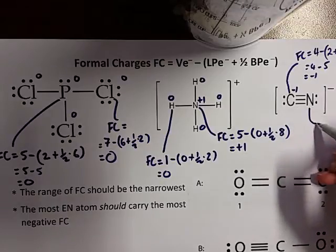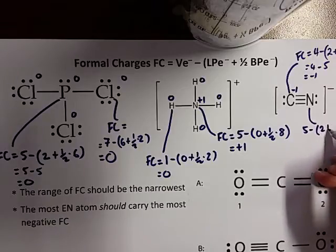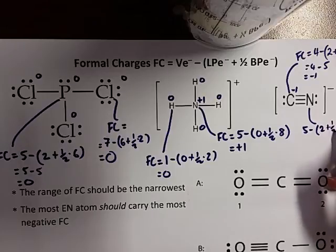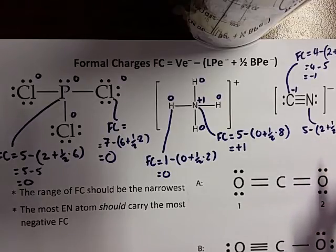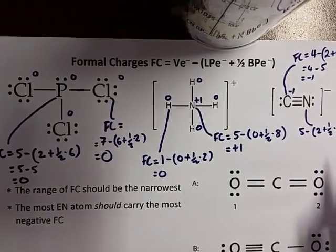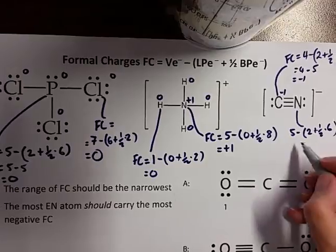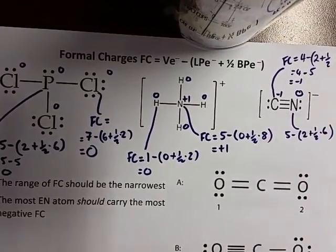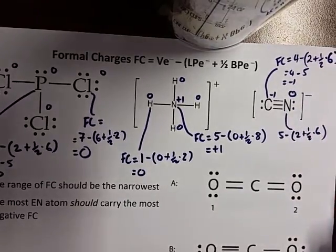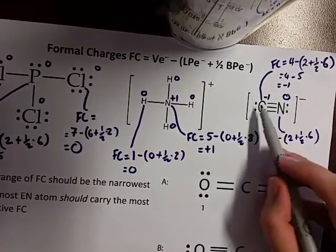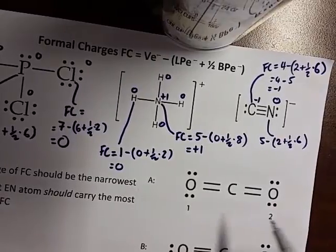What about the nitrogen? Nitrogen is usually five minus what's in brackets — two plus a half times six. Five minus five really gives us a formal charge of zero. And if we add the formal charges up, we get the overall charge on the polyatomic ion.